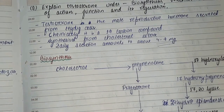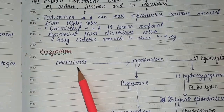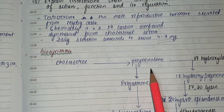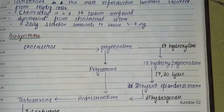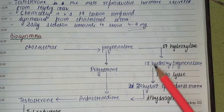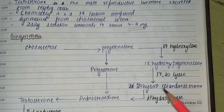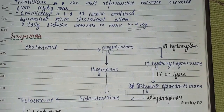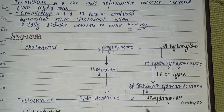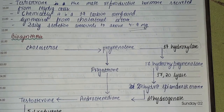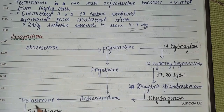Testosterone is formed from cholesterol, which is the precursor. Cholesterol is converted into pregnenolone. In the primary pathway, pregnenolone is converted into 17-hydroxypregnenolone in the presence of 17-hydroxylase, then by 17,20-lyase into DHEA (dehydroepiandrosterone). DHEA is converted into androstenedione by a dehydrogenase, and androstenedione is then converted into testosterone. Testosterone is further converted into dihydrotestosterone (DHT) by the enzyme 5-alpha reductase.